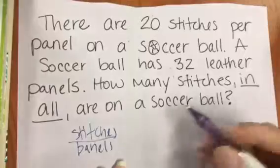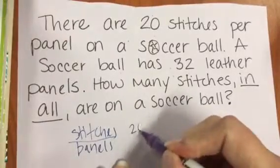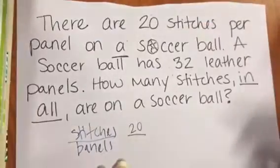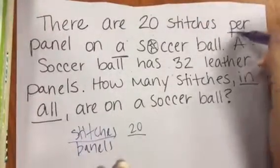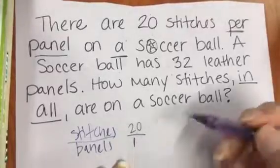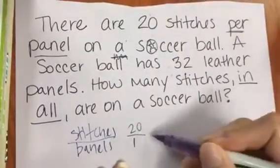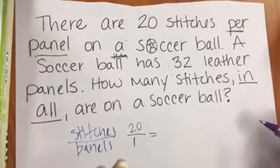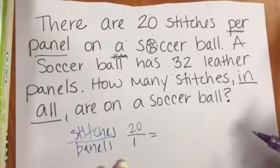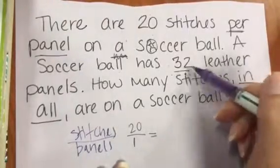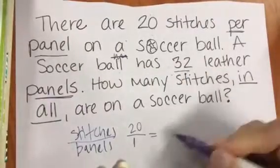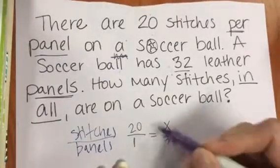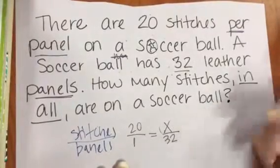It's going to go on top. It's the stitches per one panel. Per panel, so that means it's just one. And then a soccer ball has 32 leather panels. How many stitches in all are there on a soccer ball? So where am I going to put this 32? It's 32 panels, so it's going to go in the denominator. So 32 goes here. Here's my x. That's what I'm looking for. I'm looking for how many stitches in 32 panels.